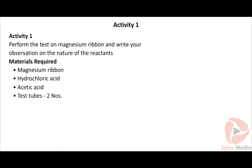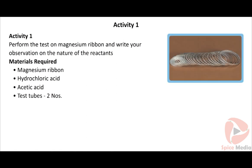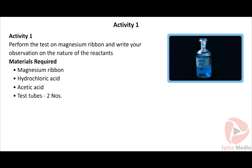Activity 1: Perform the given test and write your observation on the nature of the reactants. Materials required: magnesium ribbon, hydrochloric acid, acetic acid, and two test tubes.